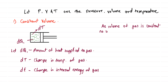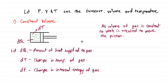As the volume of gas is constant, no work is required to move the piston — the piston will not move. Pressure will change, but the piston will not move. Therefore, we can say that DQ1, the heat supplied, is equal to the change in internal energy of the gas, which is equal to Cv·DT. This is Equation 1.